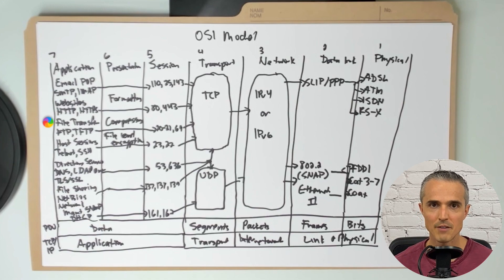File transfer. FTP is on ports 20 and 21, the first for data transfer, the second for control. And then there's trivial FTP on port 69.